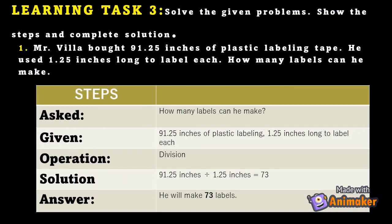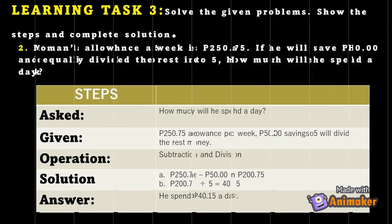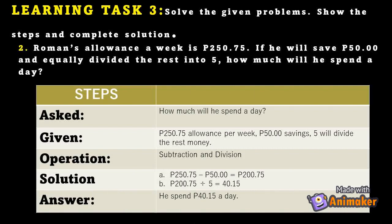Learning Task 3 — Solve the following problems and show the step-by-step complete solution. Number 1: Mr. Villa bought 91.25 inches of plastic labeling tape. He used 1.25 inches to label each item. How many labels can he make? Number 2: Roman's allowance for a week is 250.75 pesos. If he saves 50.00 pesos and equally divides the rest into five, how much will he spend a day?